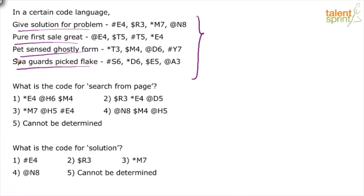Here comes the problem: if all words are unique, how do we identify the code? For example, the code for 'give' could be any of the four codes in its phrase. Similarly, the code for 'spa' could be any of its four codes. You cannot find the code simply by mapping common words, the way we have solved such questions in the past. So most of us would initially say the answers cannot be determined.